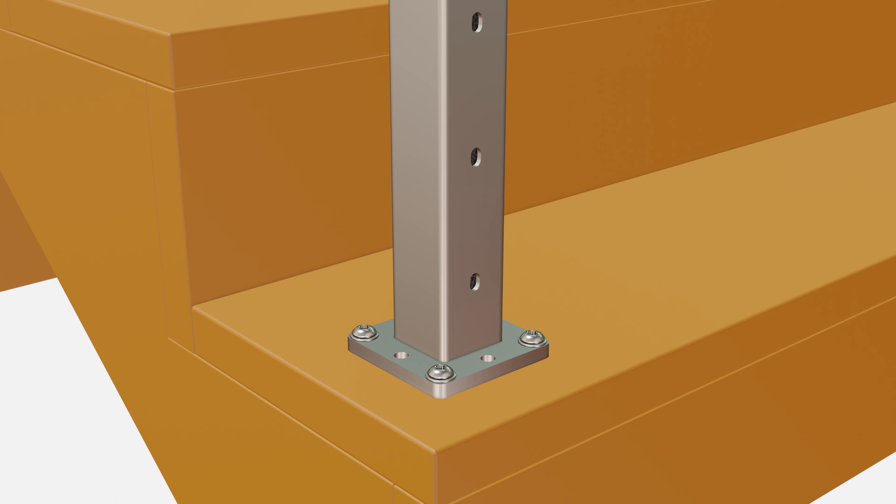Repeat these steps for each post on your run. When each post is fastened in place, double check again to make sure all your posts are level, square, and inline. Place foot covers on each post.